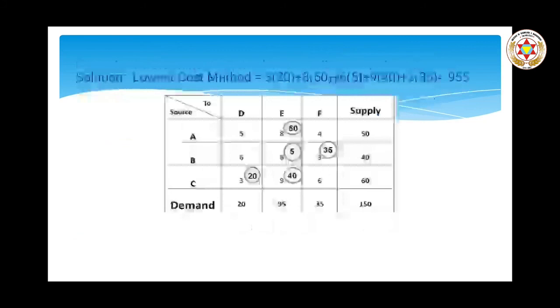Continuing the least cost method: allocate 20 units to the cell with cost 3, then 40 units to cost 9, then 5 units to cost 6, 50 units to cost 8, and 35 units to another cost-3 cell. The total cost is: 3×20 + 8×50 + 6×5 + 9×40 + 3×35 = 955. This is the least cost method answer.